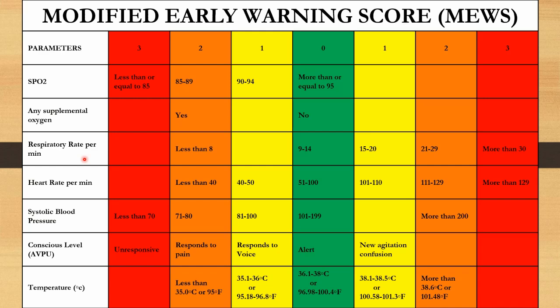The third parameter is respiratory rate per minute. If it is between 9 to 14 breaths per minute, give a score of 0. If the respiratory rate is less than 8 breaths per minute, give a score of 2. If it is between 15 to 20 breaths per minute, give a score of 2. If the respiratory rate is more than 30 breaths per minute, give a score of 3.